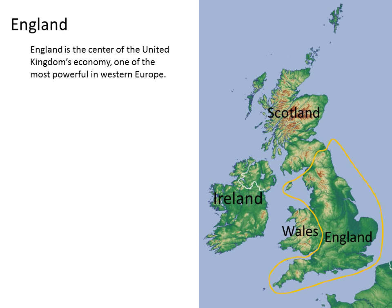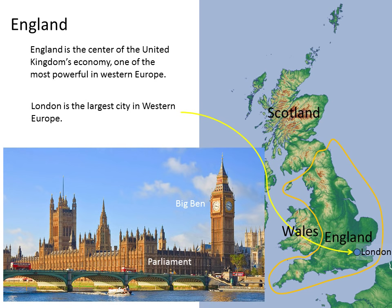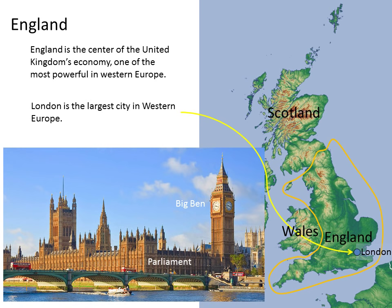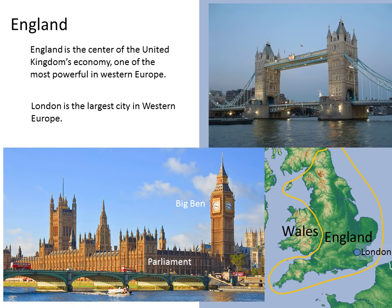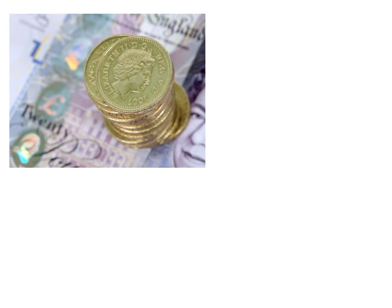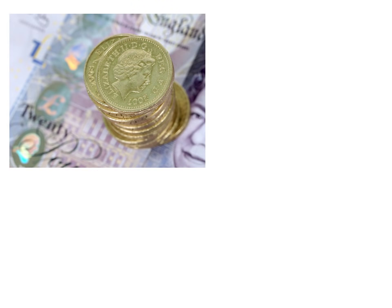England is the center of the United Kingdom's economy, and one of the most powerful in Western Europe. London is the largest city in Western Europe. For centuries, each country in Europe had its own currency; England called its currency the pound. Some Europeans thought they should all use the same currency, and they invented the euro. Many Western European countries got rid of their own currency and began using the euro. The United Kingdom didn't quite trust the plan and kept their own currency, the pound, and many of them today are glad they did.